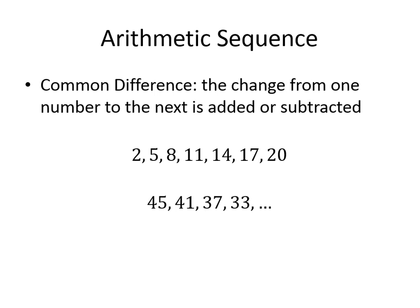If you look and see, we've got 2 to 5 — that's 3; 5 to 8 — 3; and it's 3 all the way across. So the common difference for this first one is positive 3. We're adding 3 to every single one, and since it's the same all the way across, it is an arithmetic sequence.